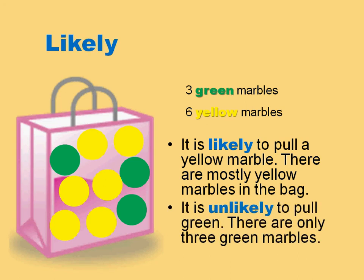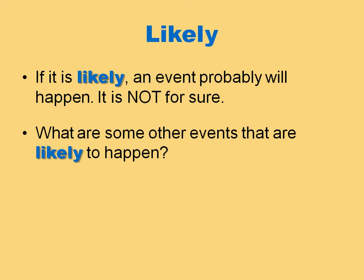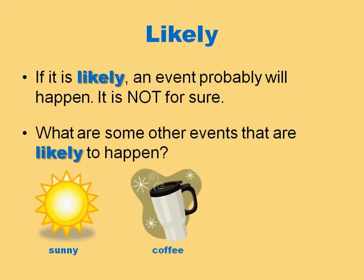If something is likely, an event probably will happen — it is not for sure. What are some other events that are likely to happen? It is likely to be sunny today; we don't have any clouds in the sky, but you never know. It is likely that I will drink coffee in the morning. And it is likely that we will have a spelling test on Friday. We do have other things that come up sometimes, but it is likely that we will have the test.